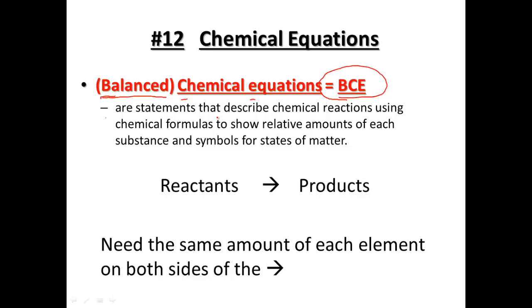Balanced chemical equations: a statement that describes chemical reactions using chemical formulas to show the relative amounts of each substance and the symbols for each state of matter. Remember our setup — reactants on the left, chemical reaction to produce our products, and we need the same amount of each element on both sides of the arrow. It's kind of like an equal sign, where whatever we start with as reactants needs to equal the amount of products we end with.